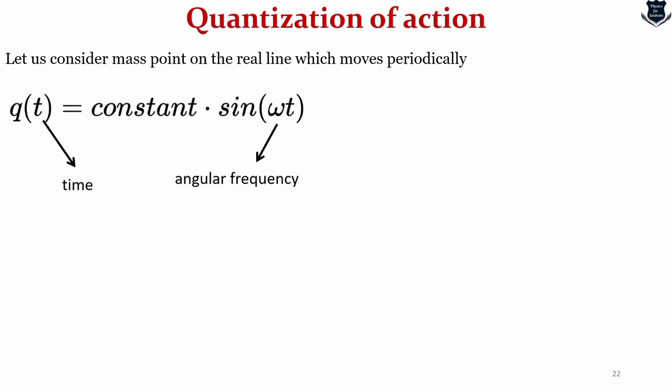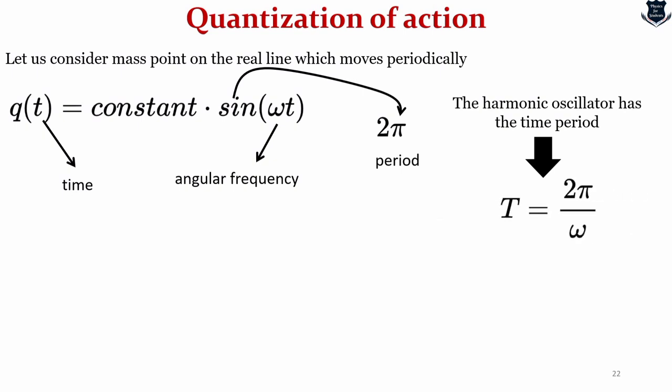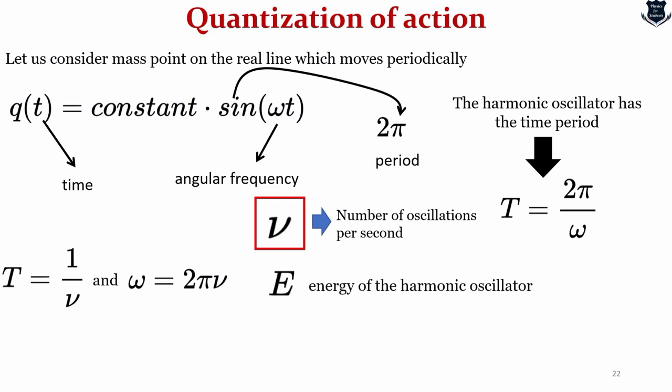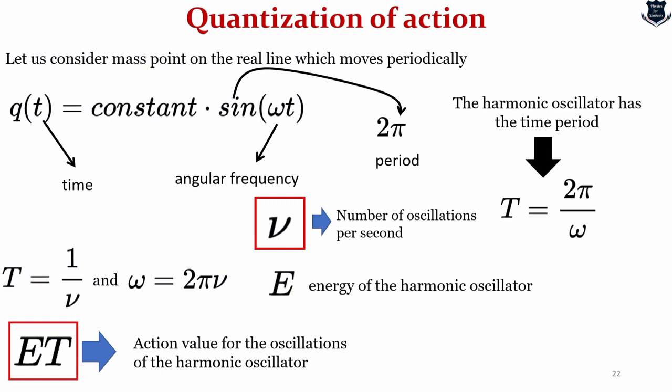Here time is denoted by t and omega is the angular frequency of the harmonic oscillator which keeps on moving. Since the sine function has a period which is 2π, and the harmonic oscillator has the time period t equals 2π upon omega. By definition, we can say that the frequency ν is actually the number of oscillations that this line takes in one second. Hence, we can tell t equals 1 upon ν and we can obviously tell from this equation that omega equals 2πν.